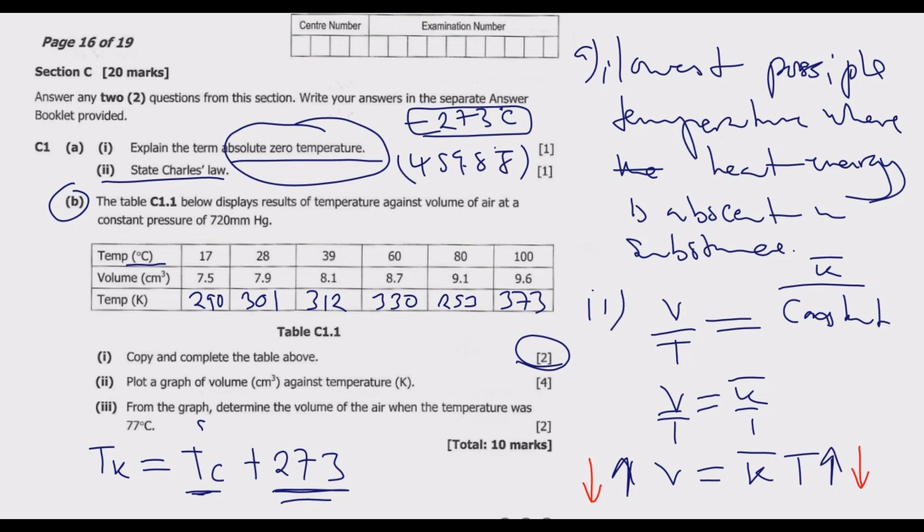Let us look at B Loma number 2. Plot a graph of volume against temperature. The first one is the y-axis, this is the x-axis. Temperature in Kelvins is on the x-axis, then the volume is on the y-axis. Once you complete the table, this is straightforward and you get four marks for doing that.